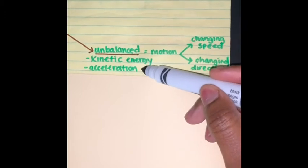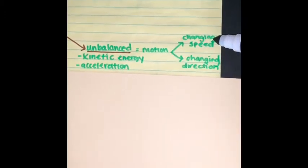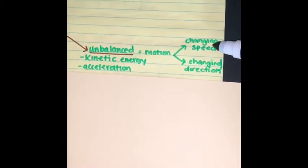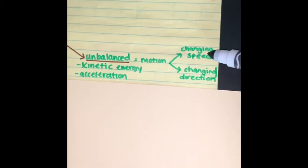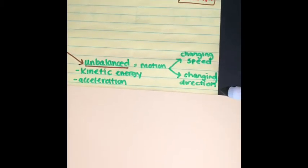Having an acceleration means that the motion is either changing their speed. I could start off as 5 miles per hour and I increase it to 20 miles per hour. And then, I slow it back down. Or, I am changing my direction.